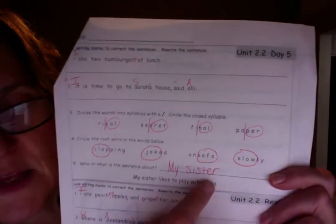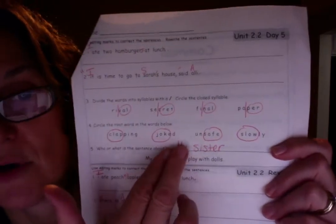Number five. Who or what is the sentence about? My sister likes to play with dolls. Well, it's about my sister. Or you could have just written sister as the subject noun. You could ask yourself who likes to play with dolls. Sister. Subject noun.